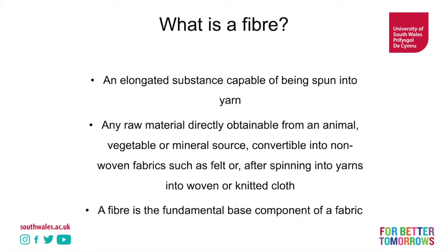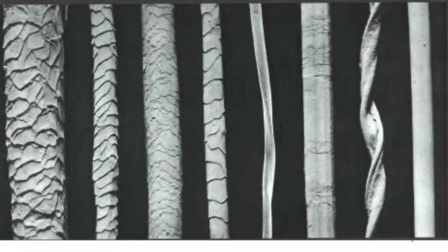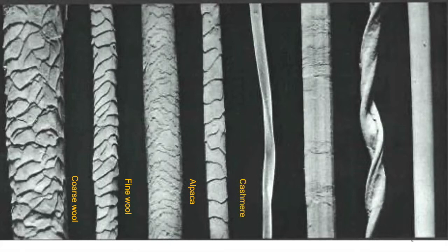Now fibres and fabrics are different things. Here you can see a range of fibres under microscopes and you can see they're very different. We've got coarse wool, fine wool, alpaca, cashmere, silk — and with all the different types of wool from coarse through to cashmere you can see the scales on the surface. Then we have silk, a very thin filament. Linen, cotton — both rough in texture on the surface — and then polyester on the end, very smooth.